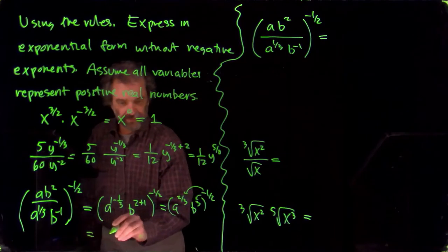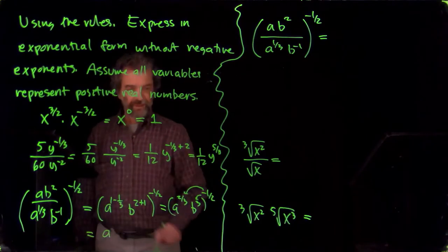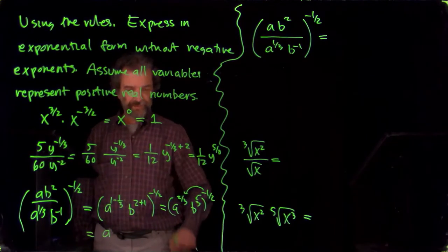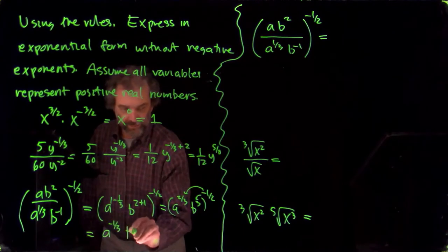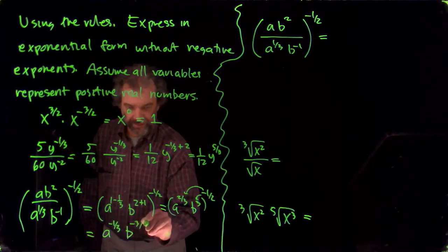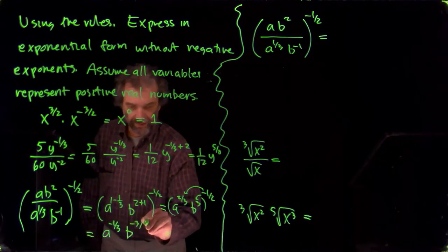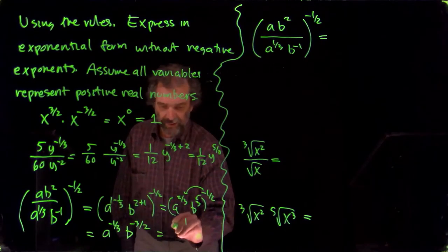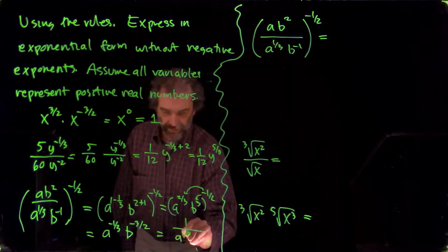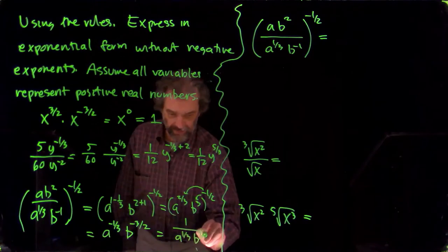So we'll get a to the two-thirds times minus one-half, which is minus one-third. And we'll get b to the three times minus one-half, minus three-halves. And we'll write that as one over a to the one-third, b to the three-halves.